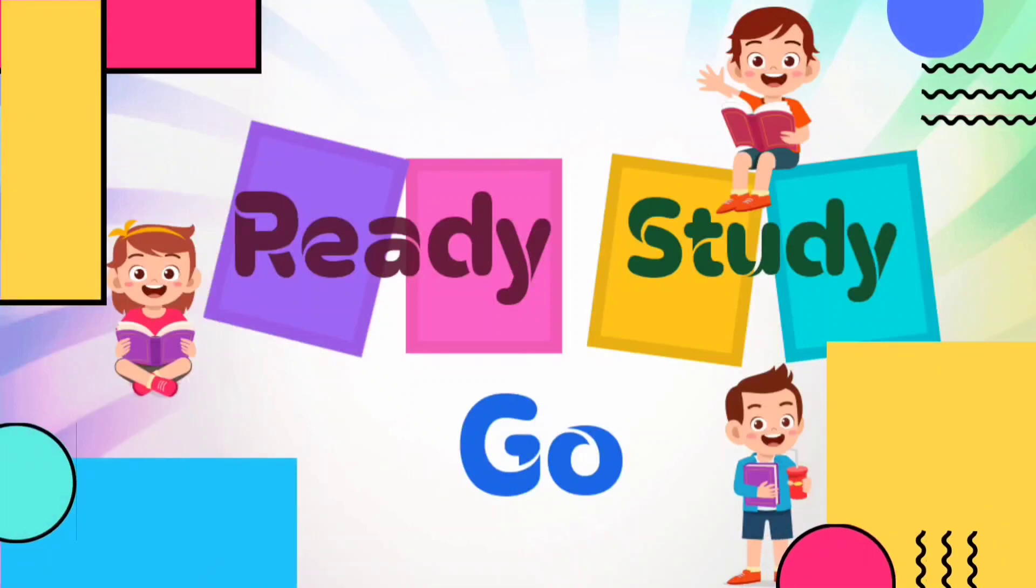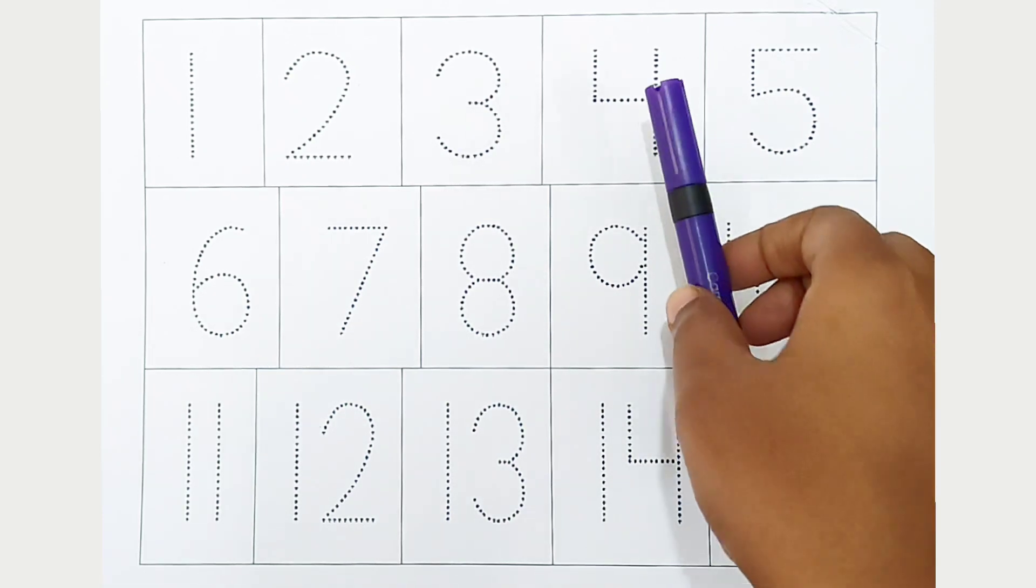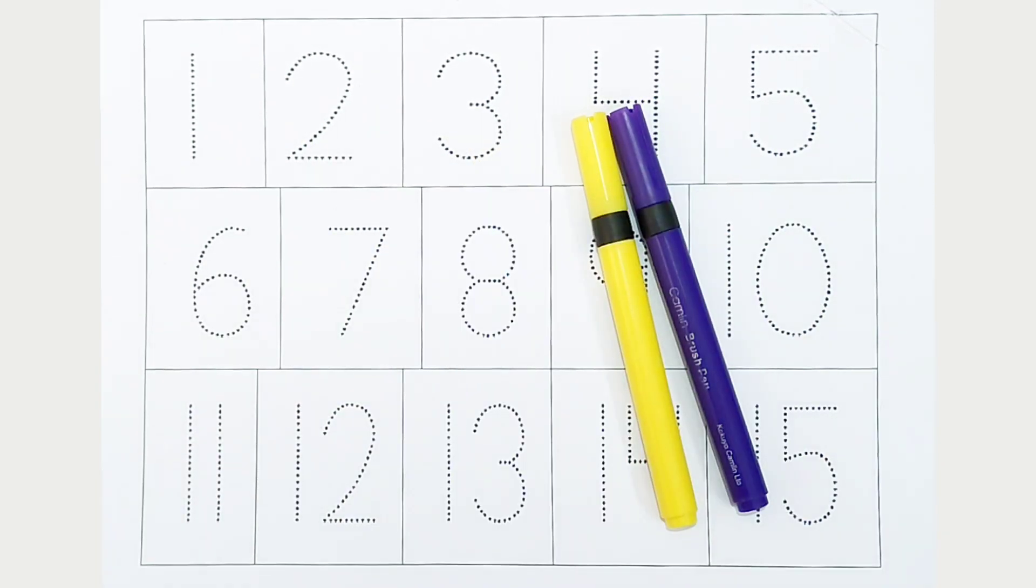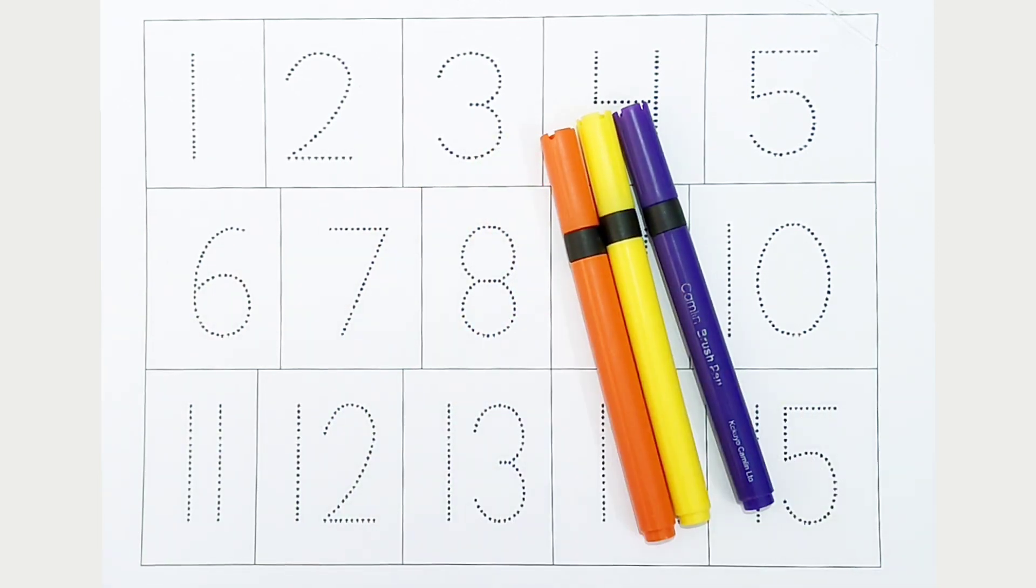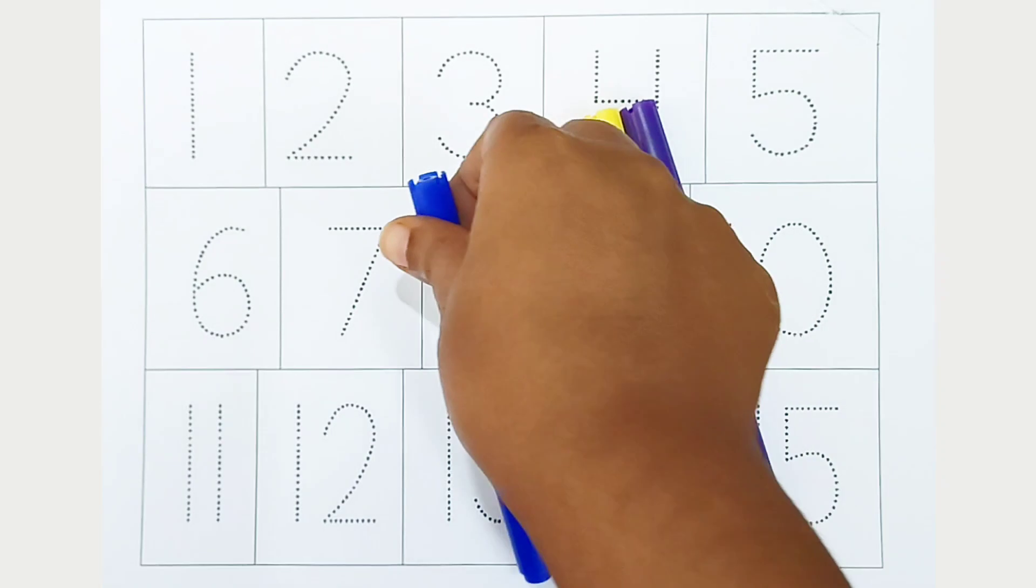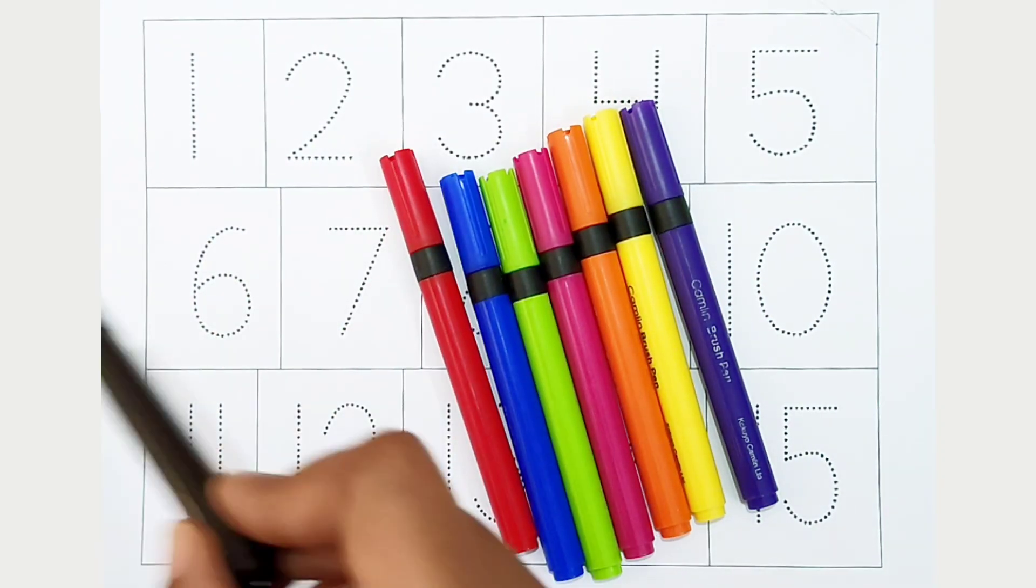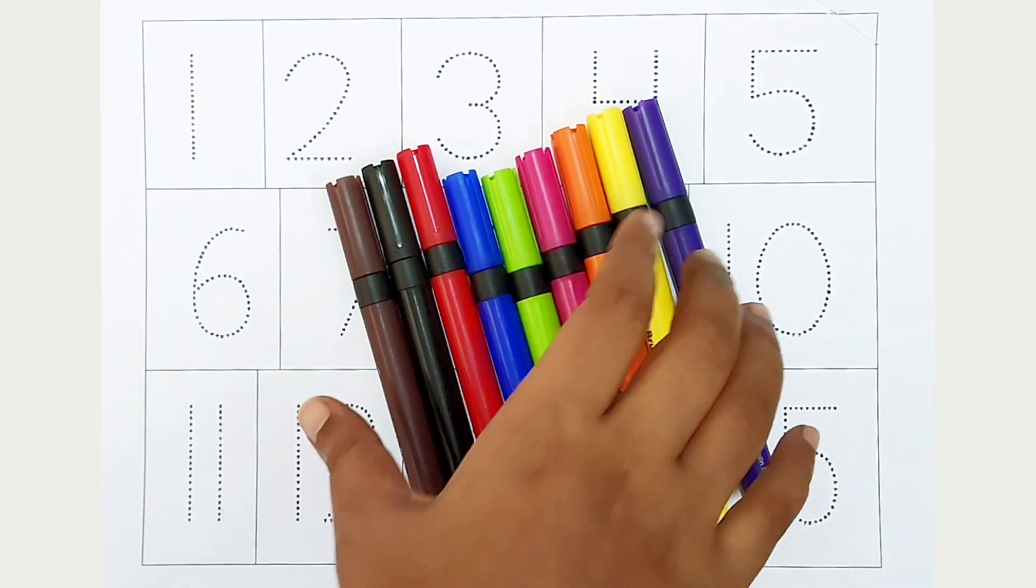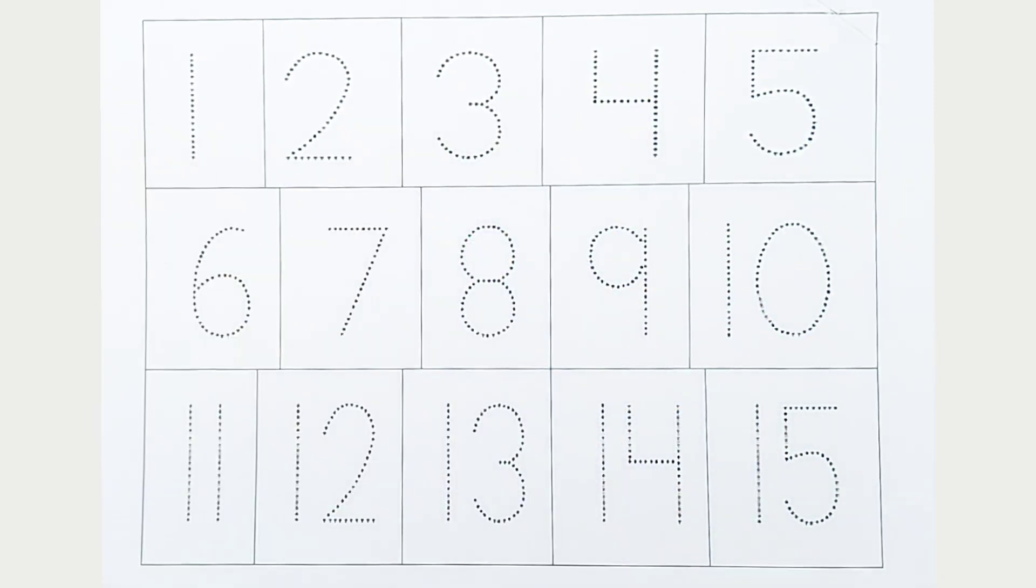Ready, study, go! Violet color, yellow color, orange color, pink color, green color, blue color, red color, black color, brown color. Hi kids, today we can learn the numbers from 1 to 15. Let's begin.